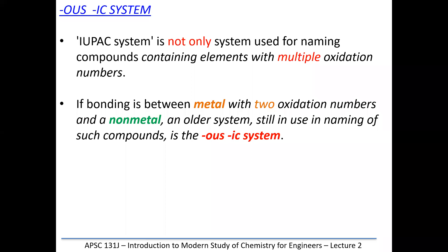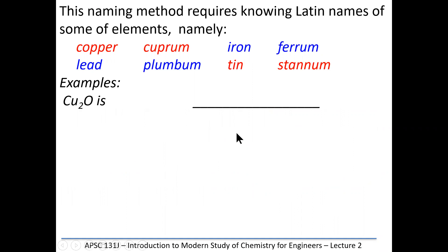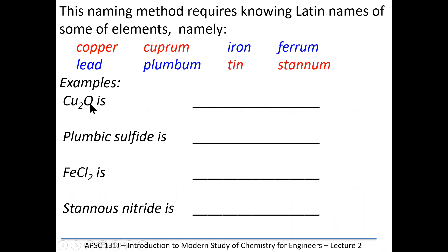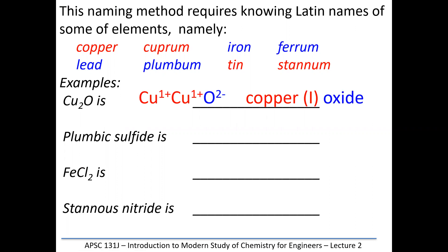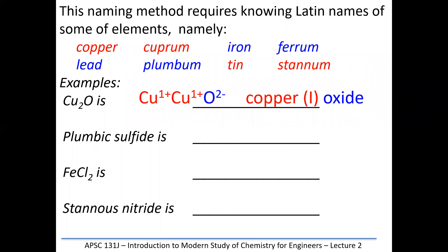Here are four examples. Oxygen is always minus two; if combined with two coppers, the copper must be plus one — copper(I) oxide or cuprous oxide. For plumbic sulfide: the 'ic' means plus four (lead can be two or four). Sulfur is always negative two when second. With a plus four and a minus two, we need two sulfurs — PbS₂. For iron with two chlorides: chloride is always minus one, so two chlorides give minus two, meaning iron must be plus two — iron(II) chloride or ferrous chloride.